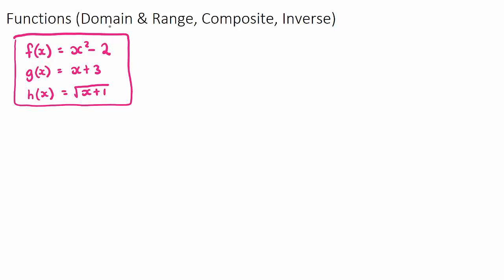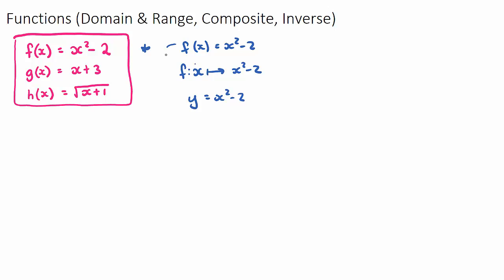In this video we're going to look at a few different types of functions — the domain and range, composite functions, and inverse functions. There are a few different ways we can write what a function looks like. f(x) = x² - 2 means the output variable given input x. We can also write this as f: x → x² - 2, or simply y = x² - 2. All of these mean the same thing.